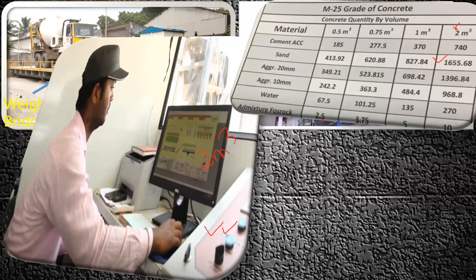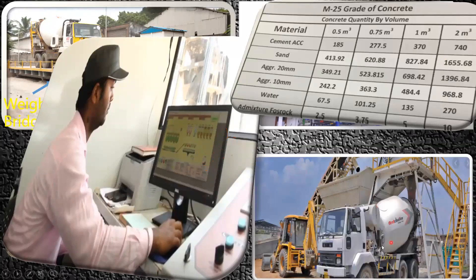Once everything is done, the concrete is ready. It flows out and is transported with the help of a transit mixer. This is all about the batching plant and how batching is done. In the next lecture, we'll see a video of how volumetric batching and weight batching are done practically on site. Thank you.